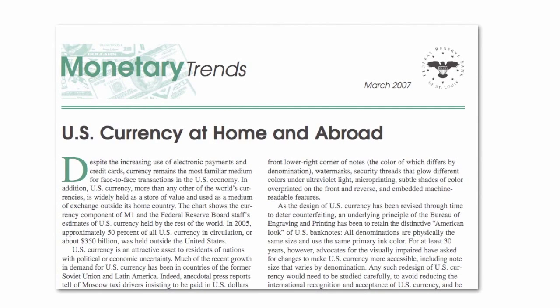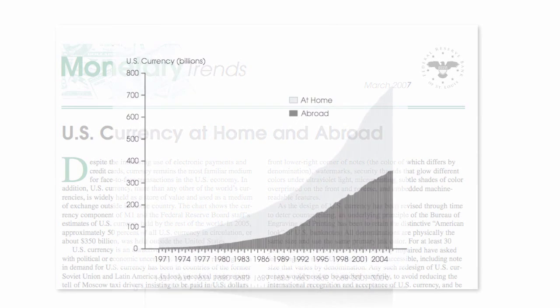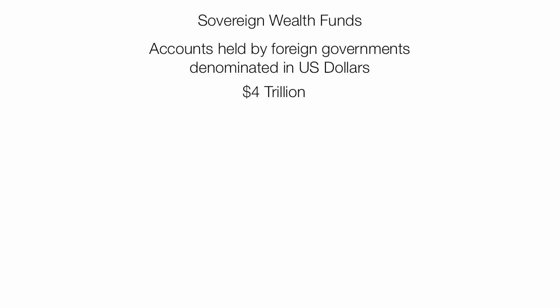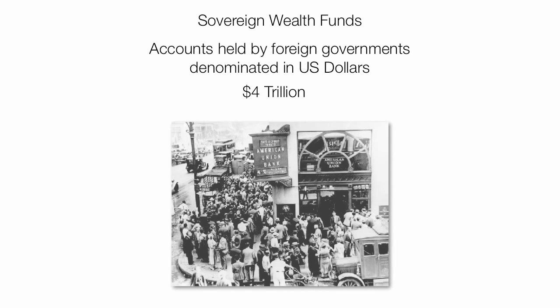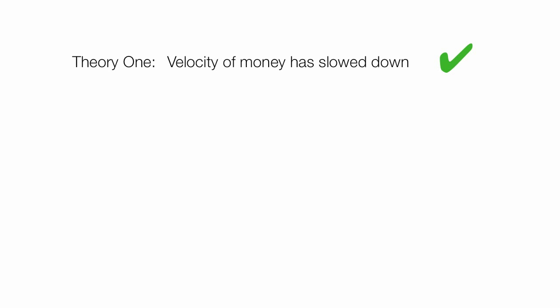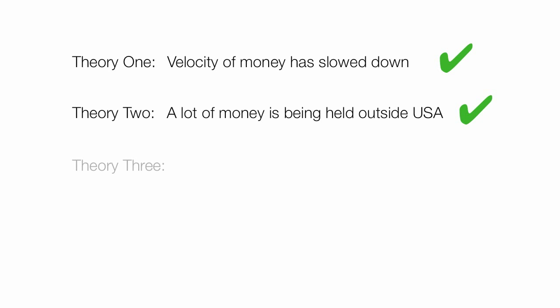Theory 2 is that foreigners hold a lot of U.S. currency. It turns out that's true — the Federal Reserve estimates that 50% of cash is held by foreigners outside the United States, and this percentage has really gone up over time. Besides the cash, there's $4 trillion held in sovereign wealth funds — accounts held by foreign governments denominated in U.S. dollars. If all these foreign countries decided to cash out, they'd run our banks dry, since we only have about $4 trillion in cash and checking accounts. So both Theory 1 and Theory 2 seem to hold true.